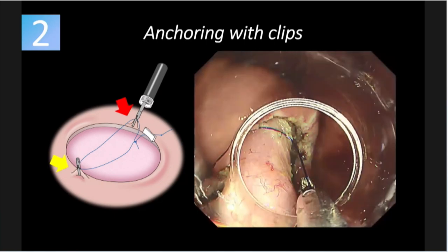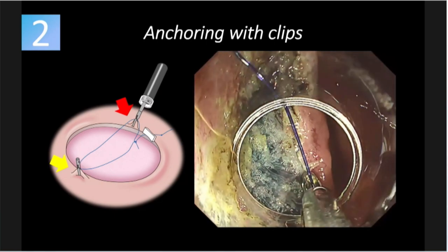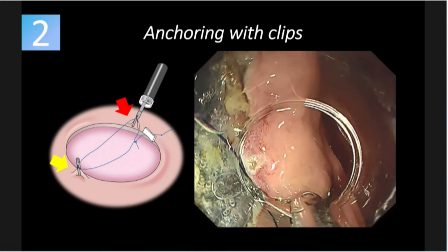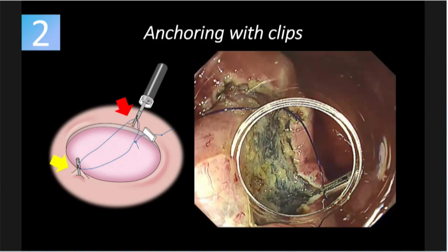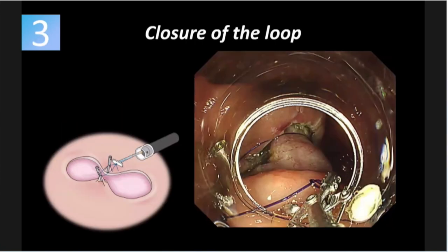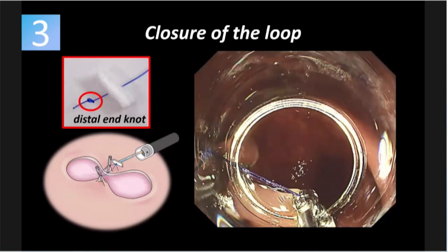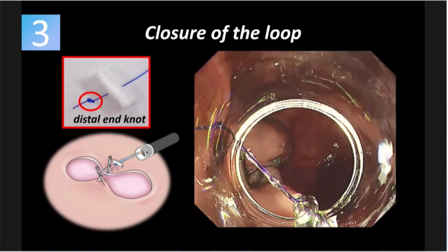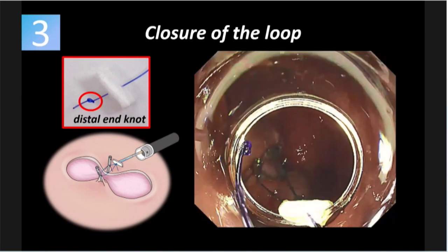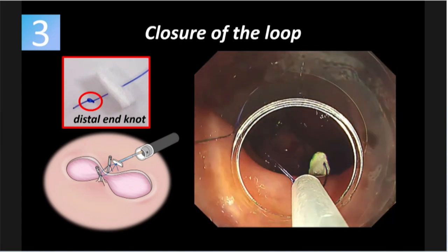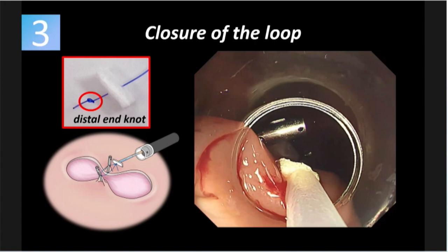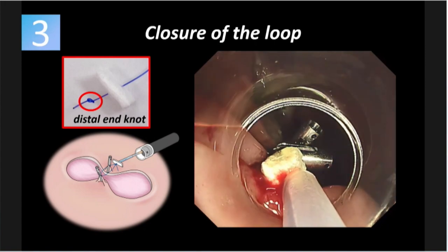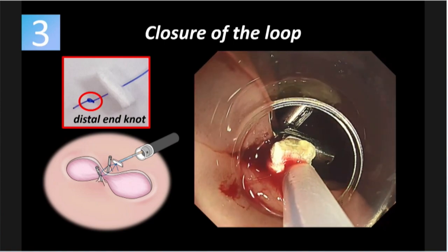After that, we try to catch the other side — big bite again, together with the loop. Then it's the same end loop — that's a very important thing. Now we are catching the tail of the loop nine — the tail knot — and bring it back to the catheter. The outer sheath pushes the felt project forward, making approximation of both sides of the clips.